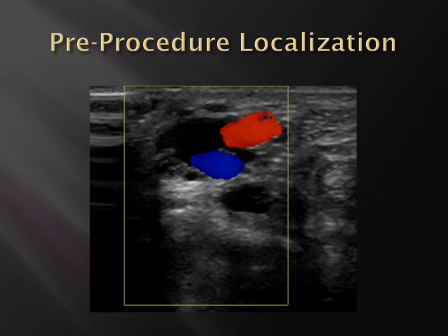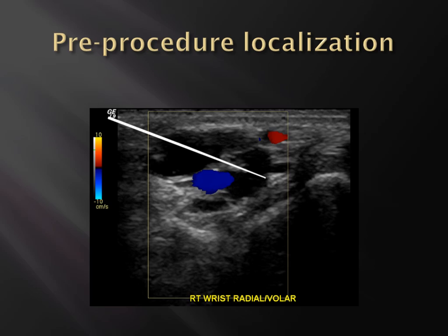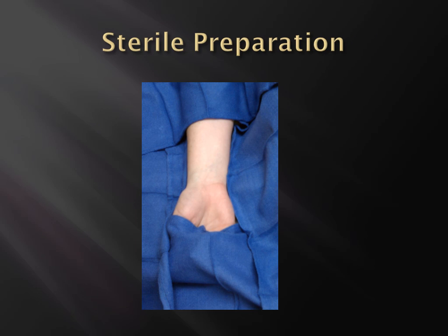We did a pre-procedural localization scan, which helped us identify the vascular structures with the conveniently positioned ganglion cyst. We identified an appropriate entry site with a longitudinal approach, which allows going between the vascular structures, accessing the majority of the cyst as well as the lobulations and septations. After written informed consent, the patient is positioned with her hand down at her side. A large field is prepped in case we need to reposition our transducer, and sterile covering is applied to decrease the risk of infection.